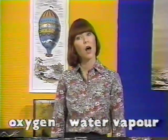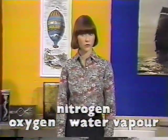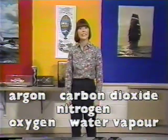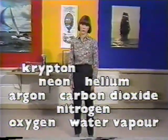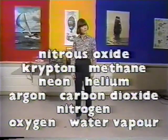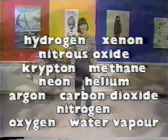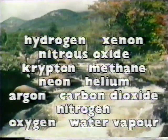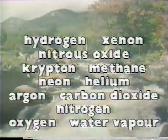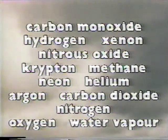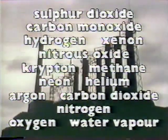But there are other gases in the air as well. About three-quarters of the air is nitrogen. And then there's argon, carbon dioxide, neon, helium, krypton, methane, nitrous oxide, hydrogen, and xenon. These gases are found in our air naturally. But we also release gases into the air through pollution. Where there's lots of air pollution, you might find carbon monoxide or sulfur dioxide.